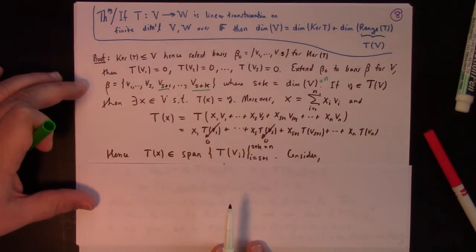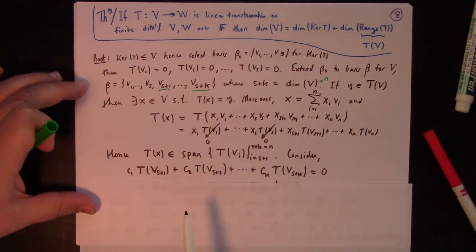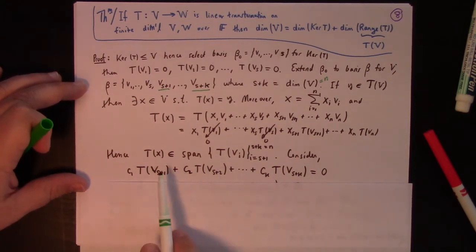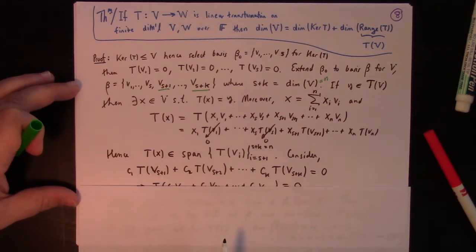But now we need to check linear independence. So I consider c1 T of Vs plus 1 plus c2 T of Vs plus 2 dot dot plus ck T of Vs plus k. My goal, of course, is to show that all these constants are 0. If we can show that, we've shown linear independence. And hence, this set is, in fact, a basis for the range.